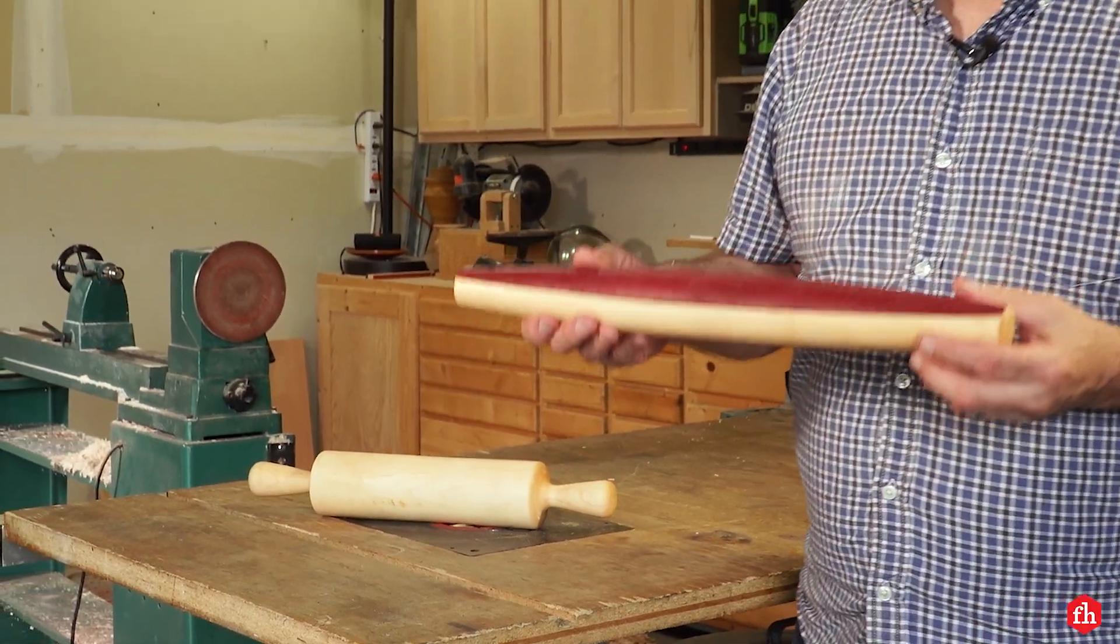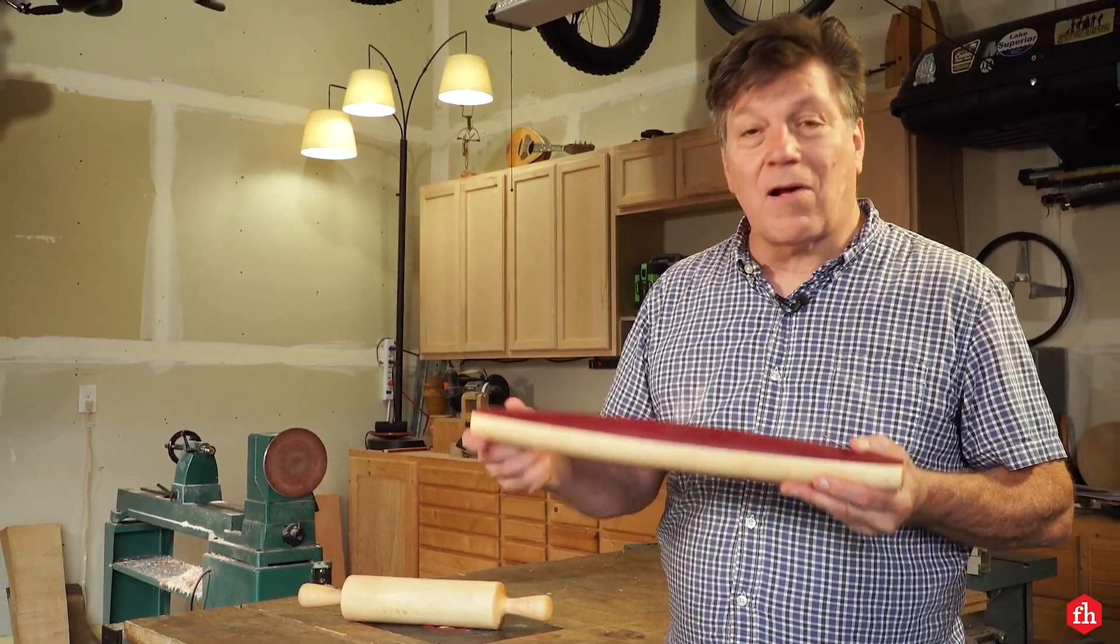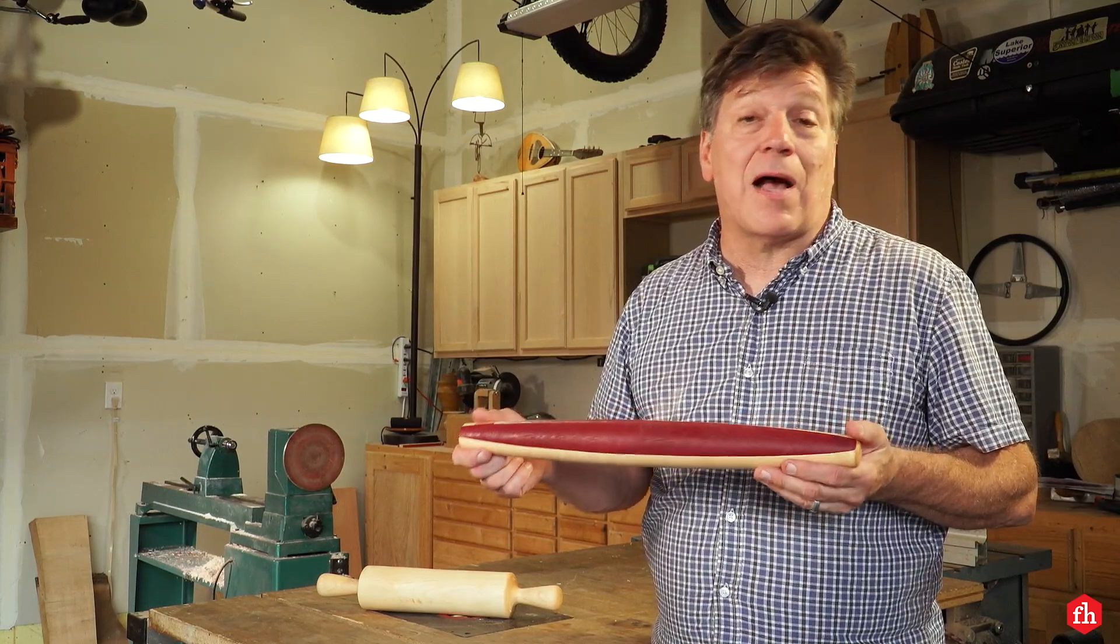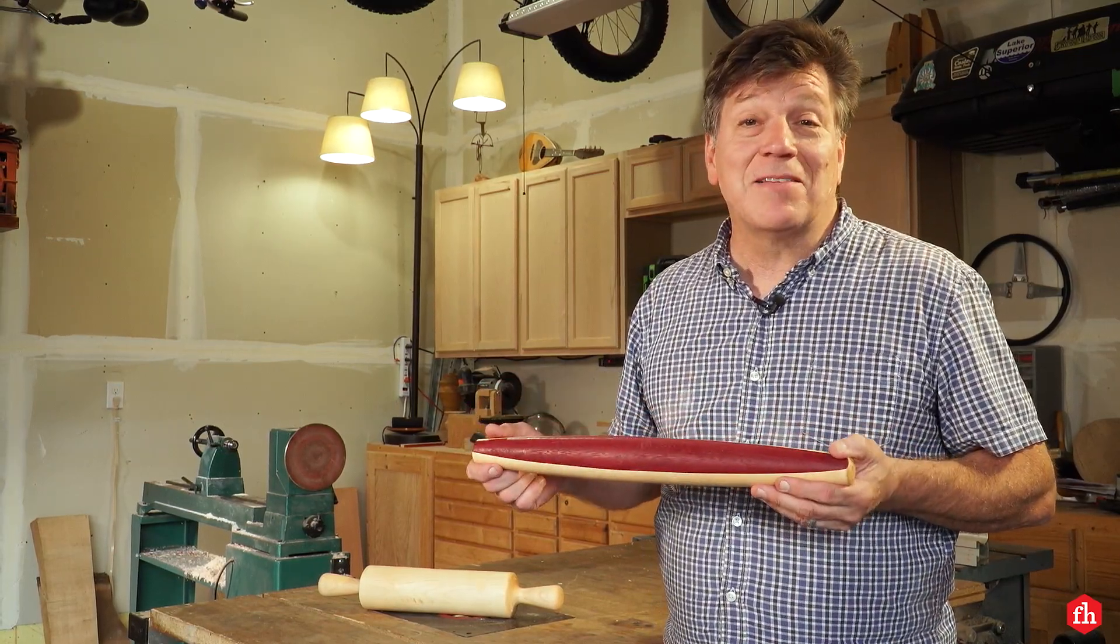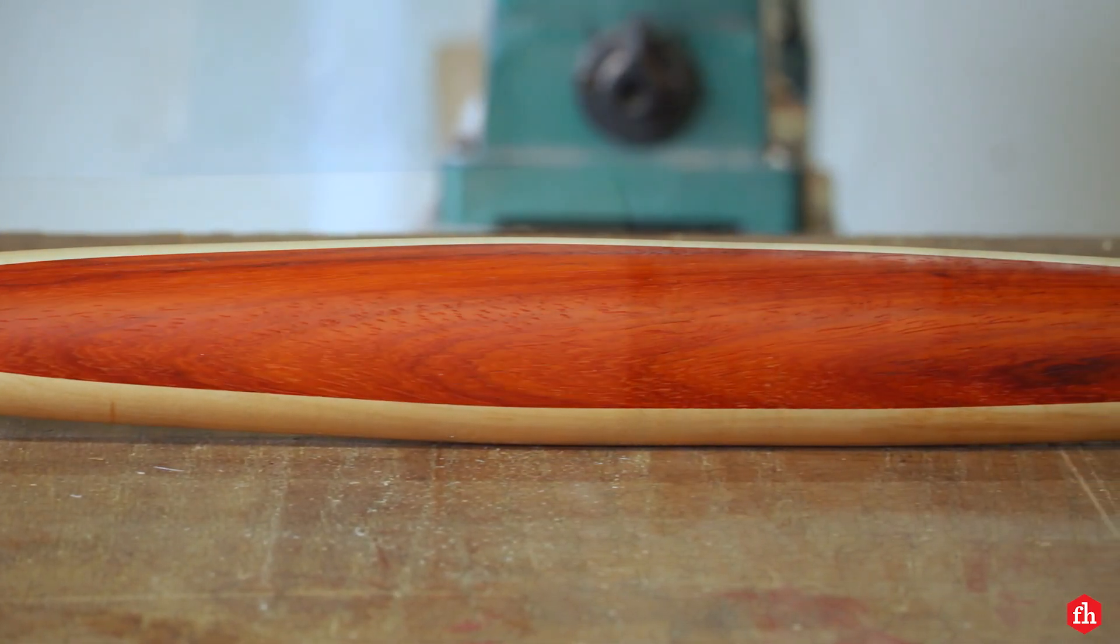All right, that wraps up our turning project today. I really like how this purple heart sets off this French rolling pin. You know, for a beginner and woodturner, this is really a doable project. Now we're ready to make some pies. For more projects like this, head over to FamilyHandyman.com.